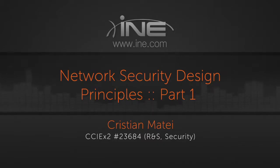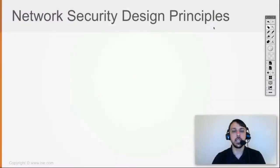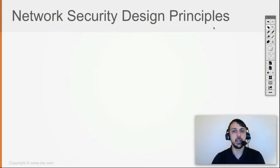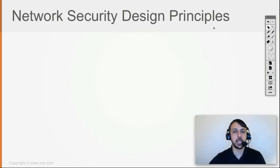We have been speaking about general terms of computer security — the scope of assets, classifying those, why we classify them, because they're vulnerable, how to classify vulnerabilities, and then because assets are vulnerable, we implement countermeasures and classify them. Now let's speak about network security design principles, a couple of them in general.